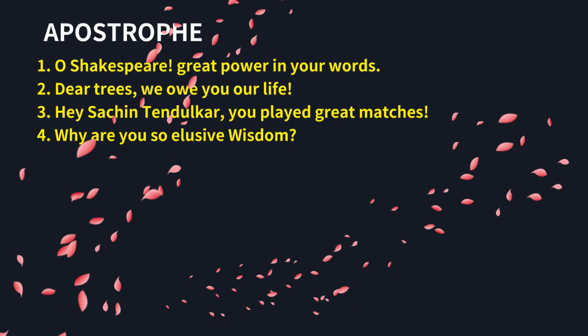In all these sentences, what we see is that there is a direct address. This direct address is done to whom? In the first sentence, it is being spoken to Shakespeare, who is in no position to reply back or respond, because he is dead. In the second sentence, the direct address is to trees, which is inanimate and therefore cannot respond. Sachin Tendulkar is alive but absent at that point of time, and therefore he cannot respond.